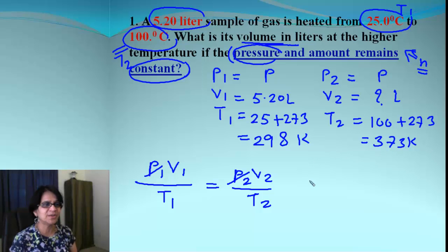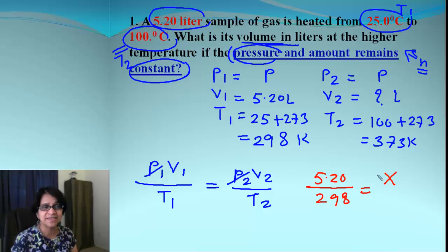So, when we plug in the values, this is 5.20 divided by 298. And if I don't know how much is the volume, that is X divided by 373. When we solve for X, the value which we get is 6.51 liters.